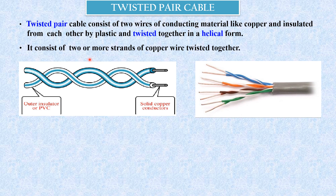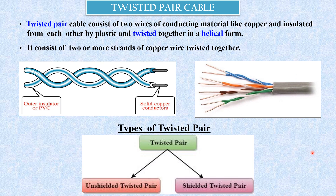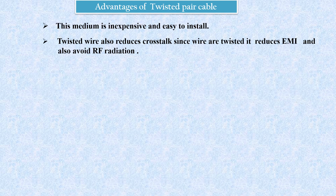Because of the twist, it generates a magnetic field that cancels the electromagnetic effect. The most common guided transmission media for both analog and digital signals is twisted pair cable. It is the most commonly used medium in the telephone network. The twisted pair cable can be divided into two categories: Unshielded Twisted Pair (UTP) and Shielded Twisted Pair (STP).